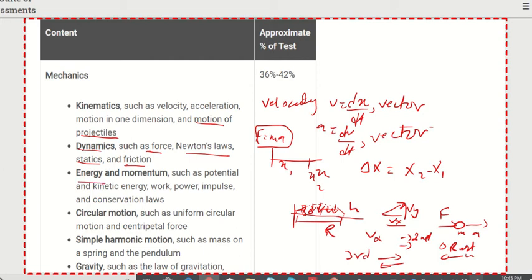Next is energy and momentum. There are two forms of energy: potential energy and kinetic energy. Kinetic energy equals the change in work. Power is the rate of work.